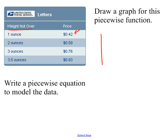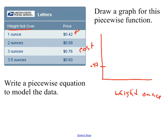If I draw a graph, the weight in ounces is my independent variable or input, and the cost is my dependent variable. It costs 42 cents, so anything from zero to one ounce costs 42 cents. But really, if it's zero ounces, is it going to cost any money? No — I wouldn't pay money to mail nothing.